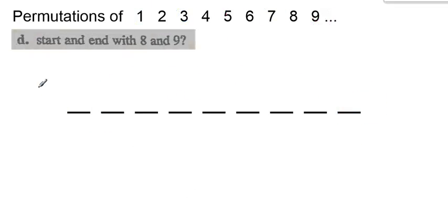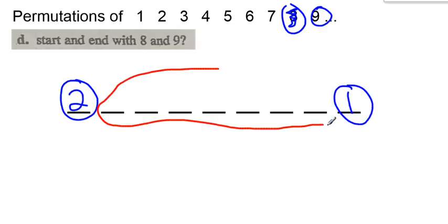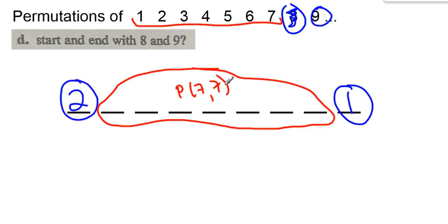Now we need to start and end with 8 and 9. When I fill the start position, I only have two choices — either an 8 or a 9. Whichever one I pick, I only have one choice for the final digit. Then the remaining seven positions have seven numbers left over, which is a permutation of seven objects into seven positions, so 7 factorial. The math would be 2 times 7 factorial times 1, which gives 10,080.